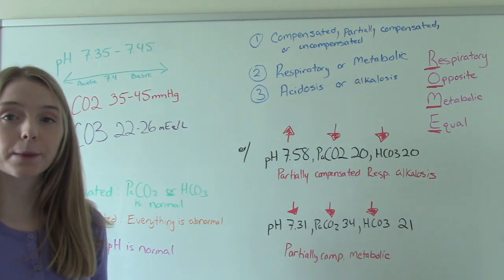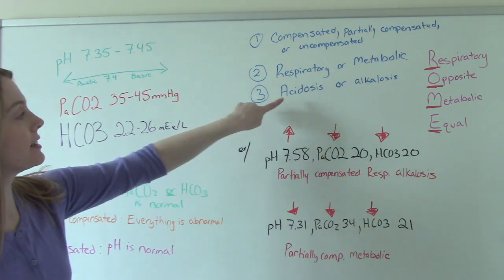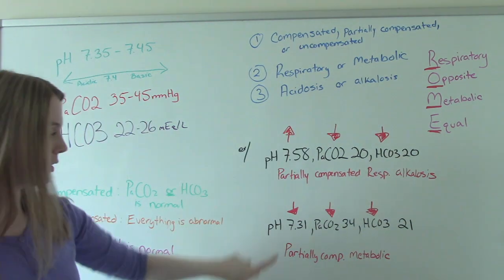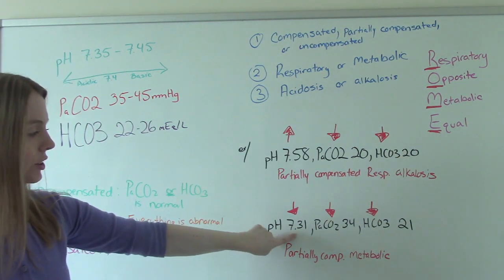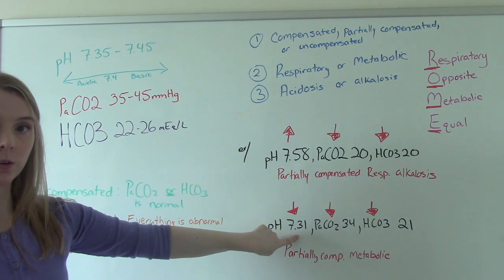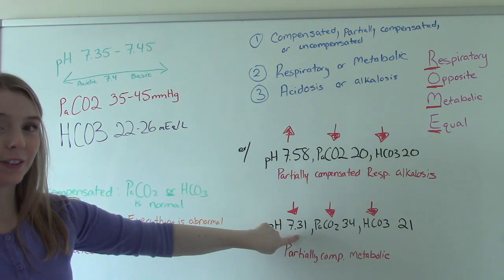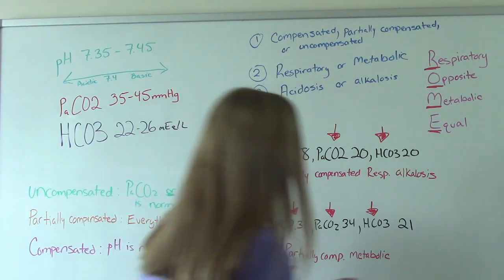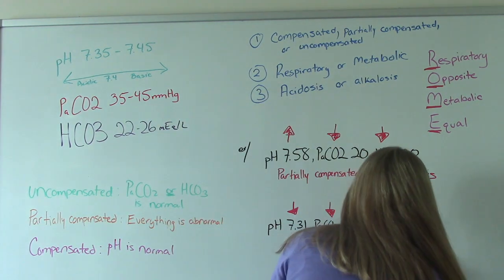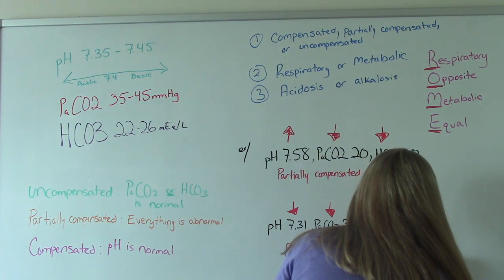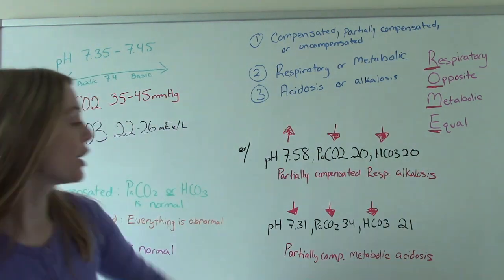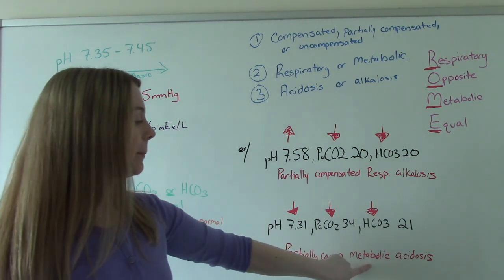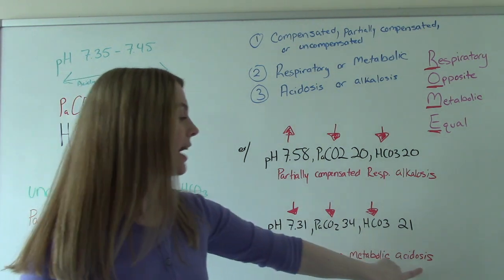And then finally, step three: is this acidosis or alkalosis? We look at our pH and see that it's low, and the lower we go, the more acidic it is. So for this one, we have partially compensated metabolic acidosis.